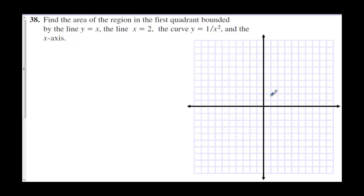So we're in quadrant 1, and we want to graph these lines. Let's graph x equals 2. Here's x equals 2. The line y equals x, and we're just looking in the first quadrant, so I can start it about here.